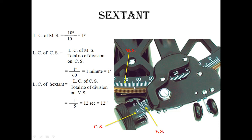The least count of the vernier scale is the least count of the circular scale divided by the total number of divisions on the vernier scale: 1 minute divided by 5. You can see the total number of divisions on the vernier scale is 5, which equals 12 seconds. This means the interval between two divisions on the circular scale is divided into 5 parts, each equal to 12 seconds.